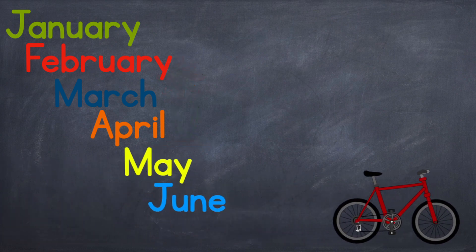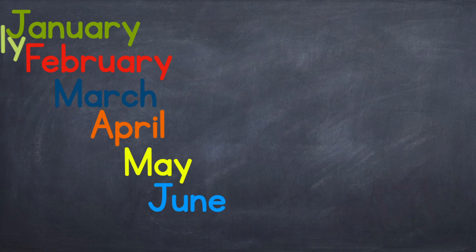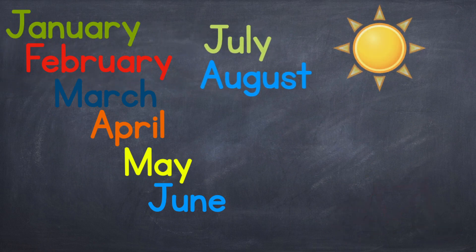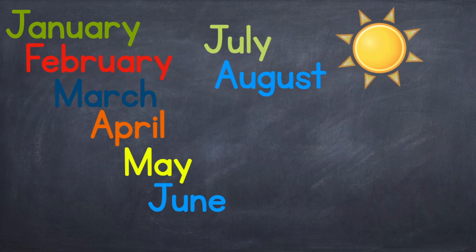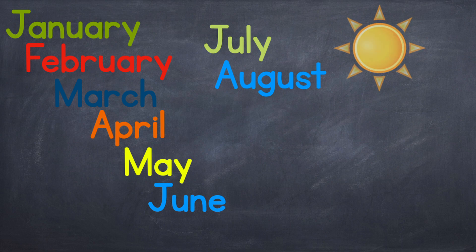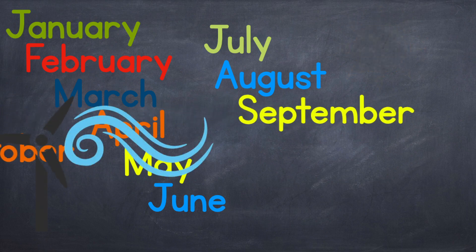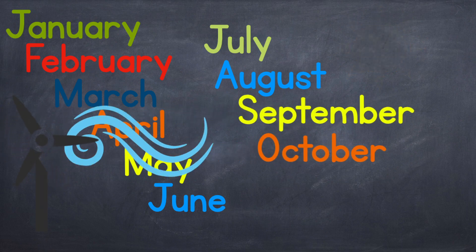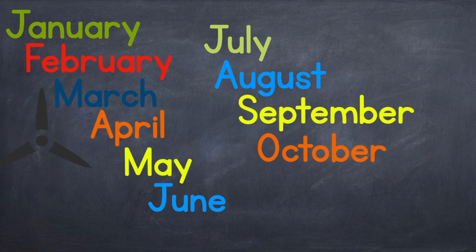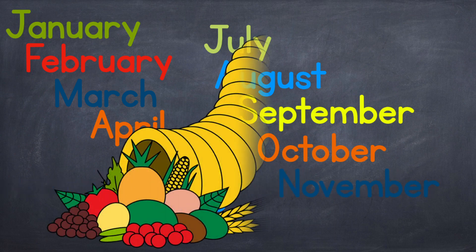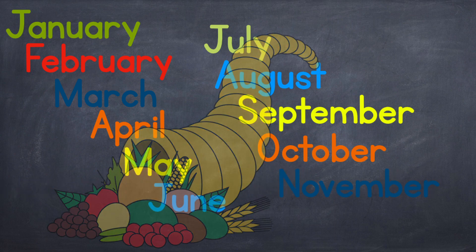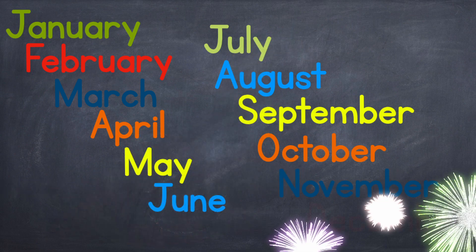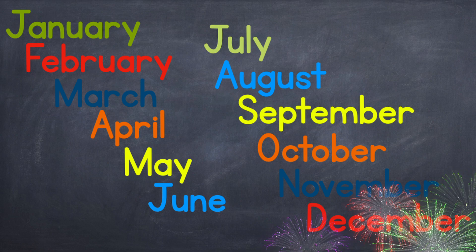Now it is May and June and we're having fun. July and August, we're soaking up the sun. Autumn breeze in September and October too. November, remember thankfulness, and December — the year is through.